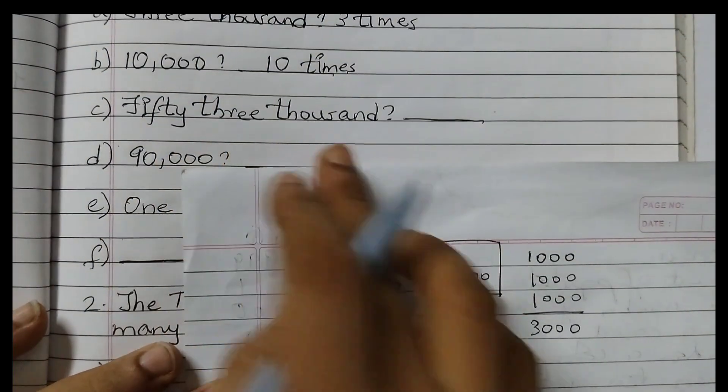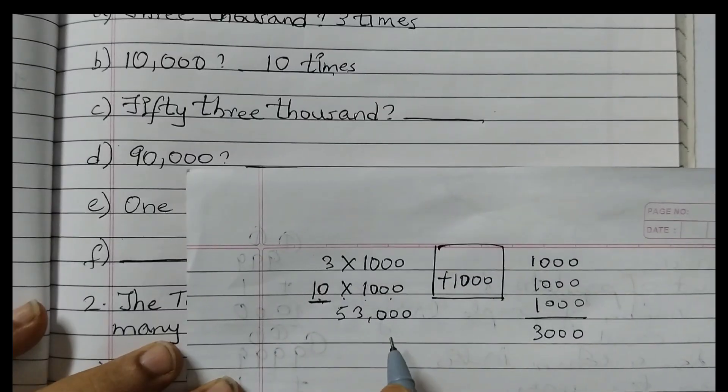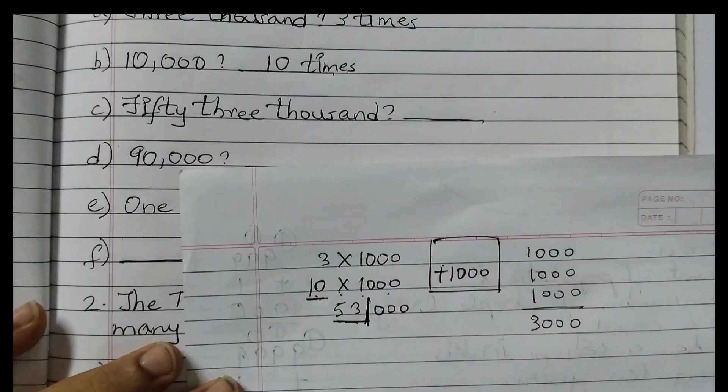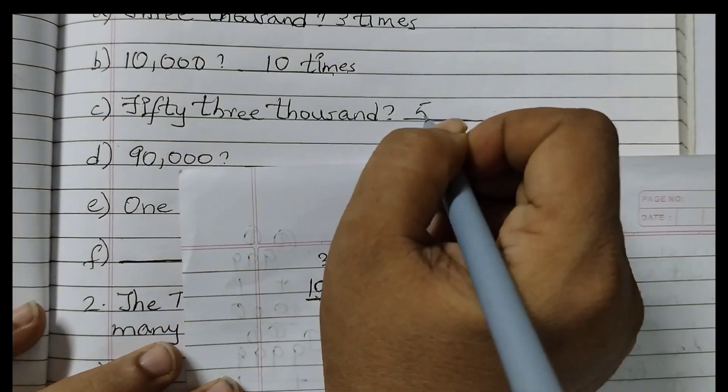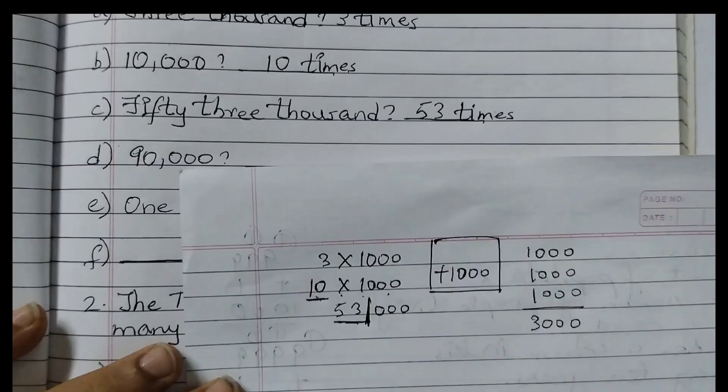Next one is 53,000. So 53,000. You can just put one line here before 1000 and you will see the answer is 53. So the answer is 53 times. You need to press the 1000 button.